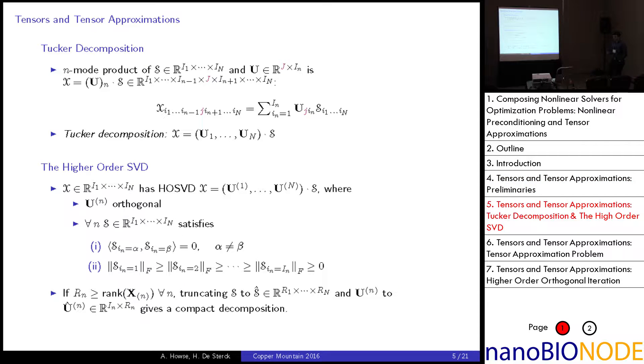The mode n matricization of a tensor, which I denote by this bold X sub n, takes the mode n fibers of our tensor as the columns of this matrix. And finally, the multilinear rank of a tensor is just the n-tuple of the ranks of the various mode n matricizations. So, just like matrices, we can multiply by another matrix on the left or the right, so long it has conforming dimensions. Similarly, we can multiply a tensor in any mode by a matrix with conforming dimensions. So, the n-mode product of a tensor S and a matrix U is X, which is obtained by this formula, which is pretty much we're multiplying the rows of U by the columns or the fibers, the mode n fibers of S.